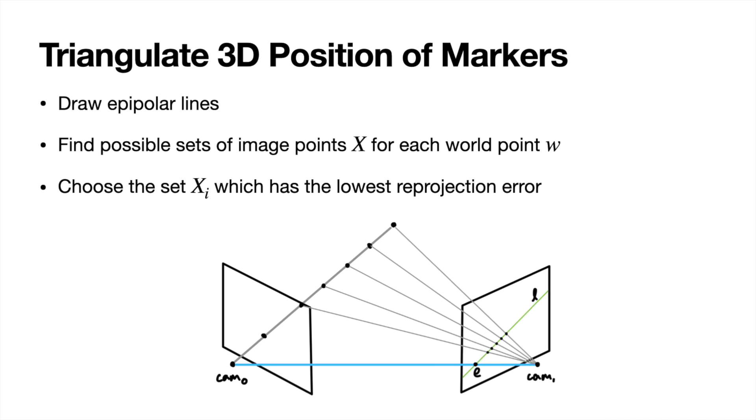So therefore, the marker could be anywhere on this line in 3D space. So the image point projected onto camera 2's sensor must be somewhere along this green line, making our life a lot easier.